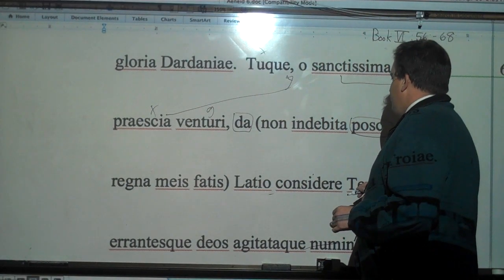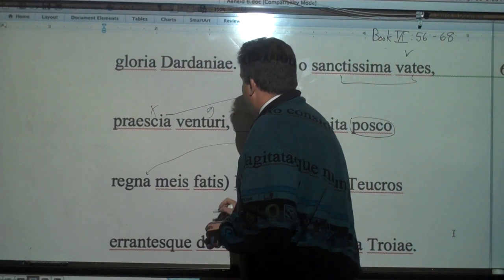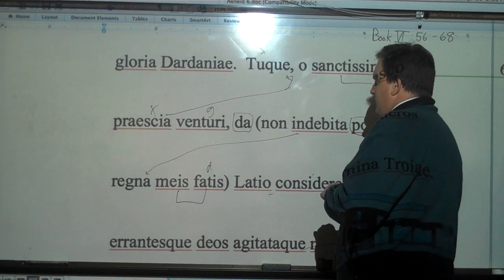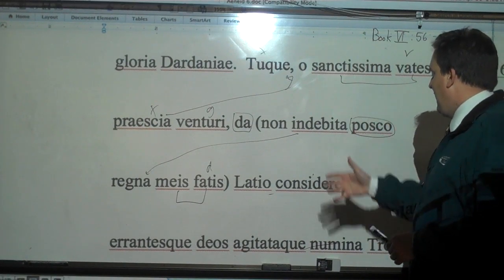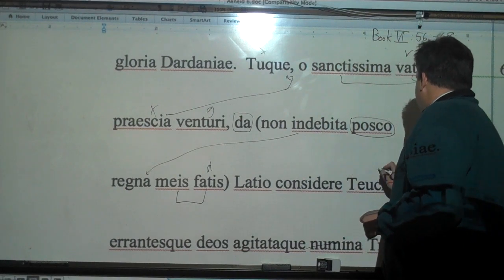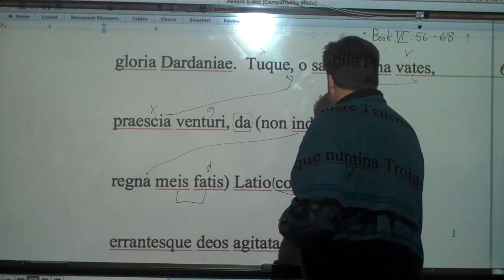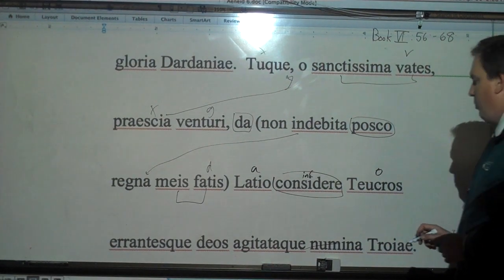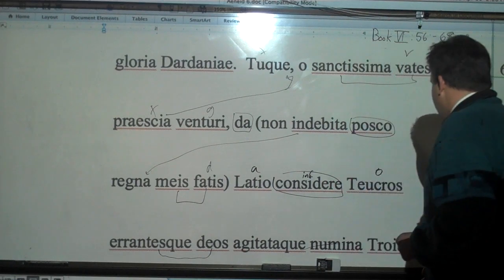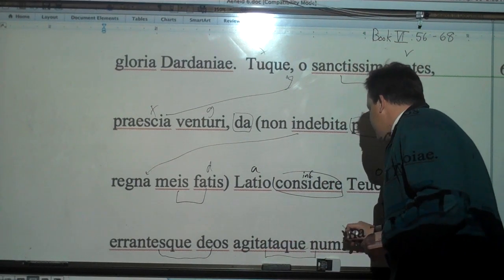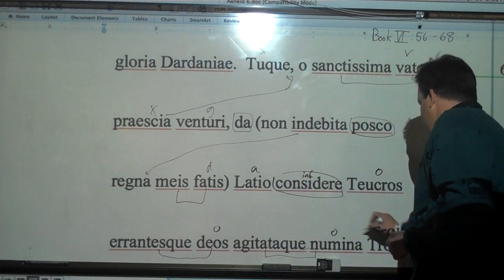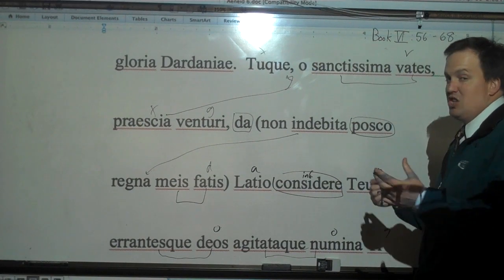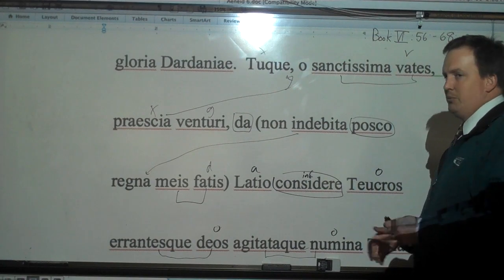And then he says here in parentheses, non indebita posco regna meis fatis. I do not demand un-owed kingdoms to my fates. So he's saying, I'm not asking for something that's not given to me. So allow the Teucrians, Teucros, to considere, to settle. This is infinitive. To settle in Latio. And grant the wandering gods and the driven divine powers of Troy to settle in Latio. So allow the Teucrians and the wandering gods, errantesque deos agitatosque numina Troiae, at least even the tossed divine powers of Troy, allow them to settle in Latio. And there we go.